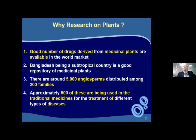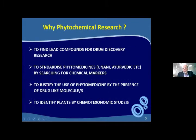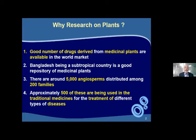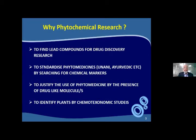A good number of drugs derived from medicinal plants are available in the world market. Bangladesh, being a sub-tropical country, is a good repository of medicinal plants. There are around 5,000 angiosperm forms distributed across around 200 families. Approximately 500 of these are being used in traditional medicines for the treatment of different types of diseases.